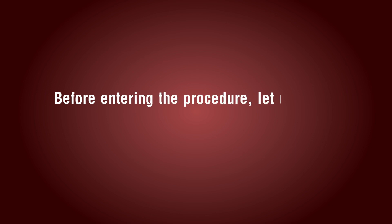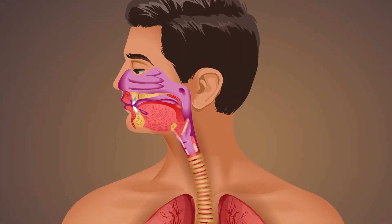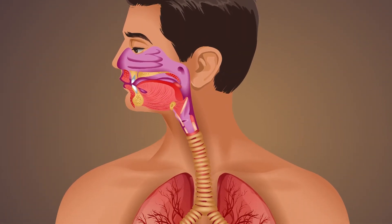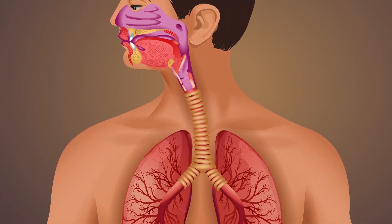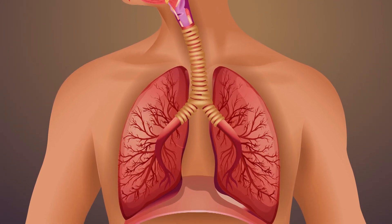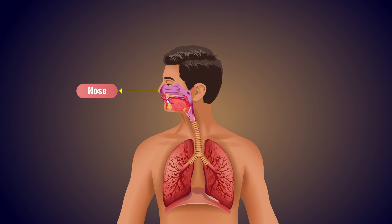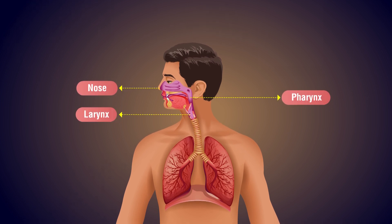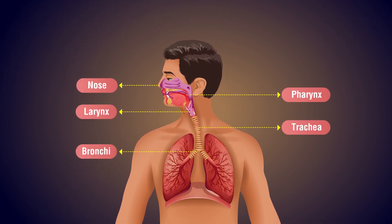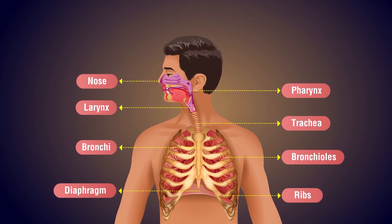Before entering the procedure, let us learn the structure of the human respiratory system. The human respiratory system contains the respiratory organs which help in breathing. The whole system contains parts starting from the nose, pharynx, larynx, trachea, bronchi, bronchioles, diaphragm, and ribs.